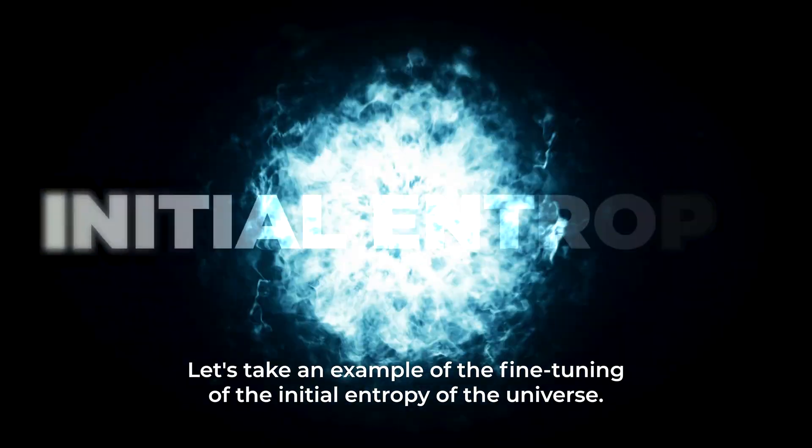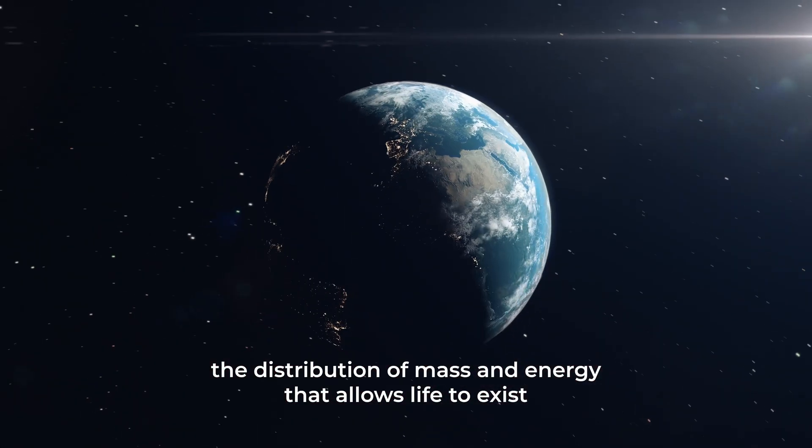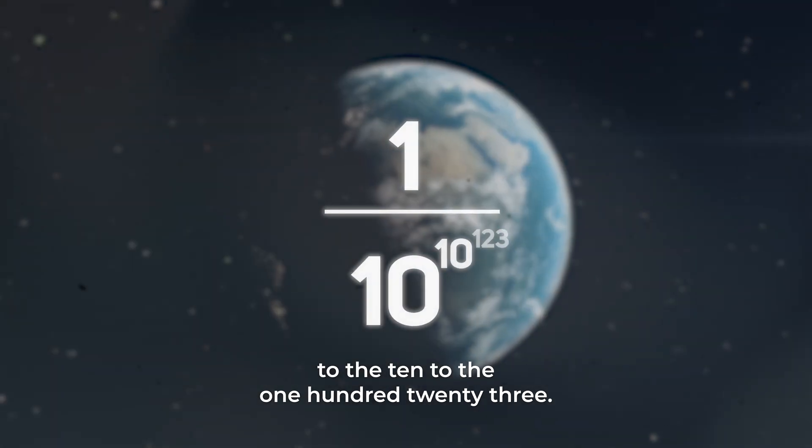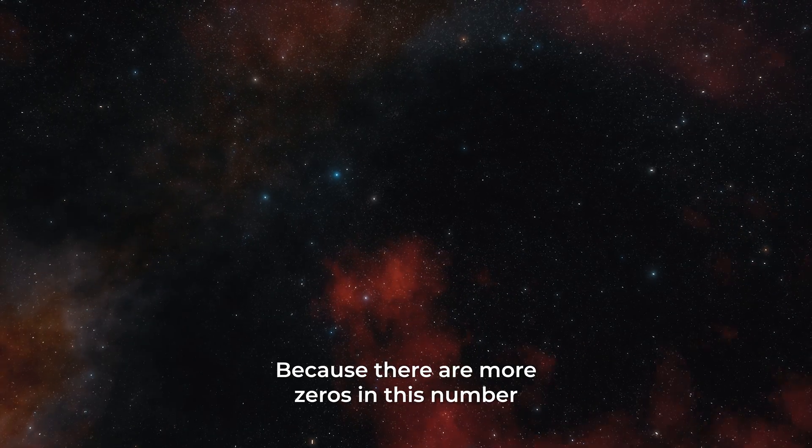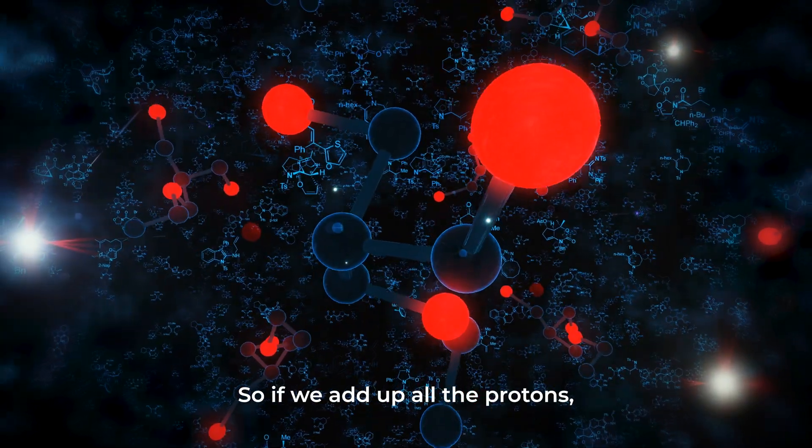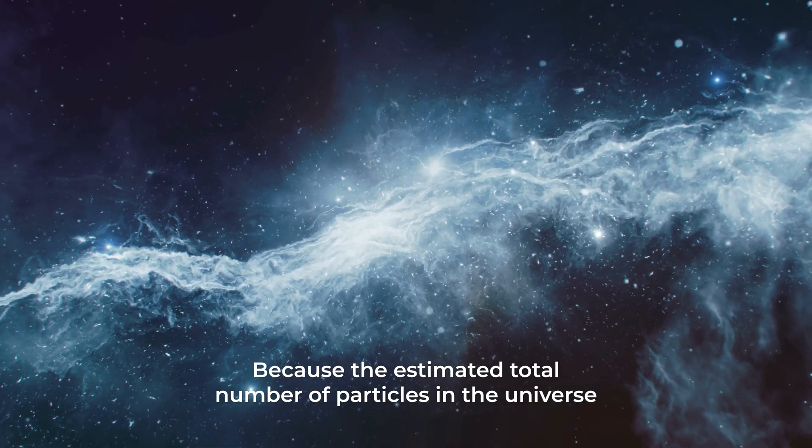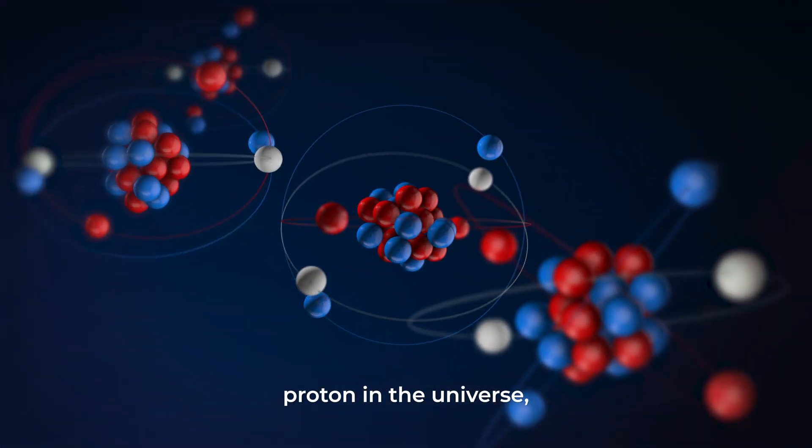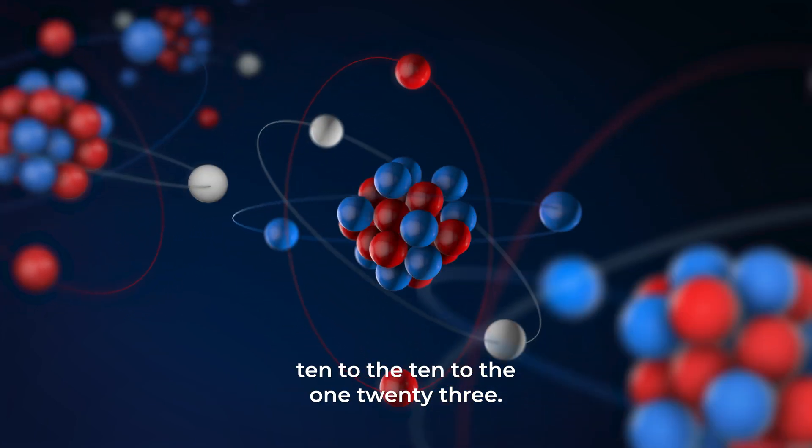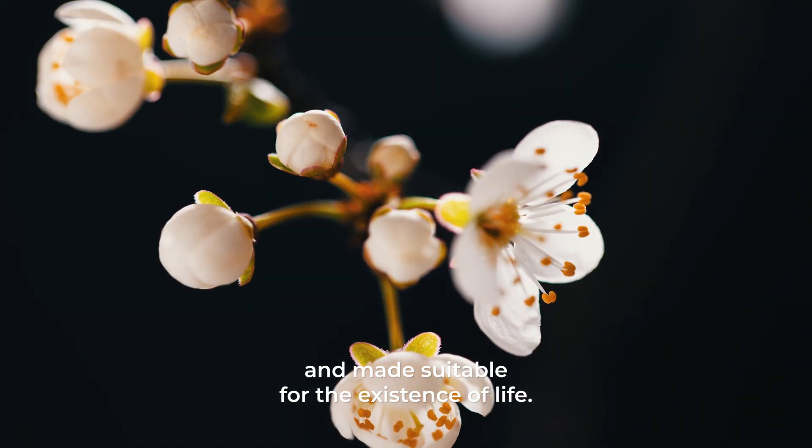Let's take an example of the fine-tuning of the initial entropy of the universe. According to Professor Roger Penrose, an Oxford physicist, the distribution of mass and energy that allows life to exist is 1 divided by 10 to the 10 to the 123. This is the highest value in the history of physics. It is even impossible to write down, because there are more zeros in this number than there are particles in the entire universe. So if we add up all the protons, electrons, and neutrons in the universe, we still cannot reach that number, because the estimated total number of particles in the universe is 10 to the 87. So even if we write a zero on every electron and proton in the universe, we still cannot write down the number 10 to the 10 to the 123. Even if the initial entropy of the universe was 1 in 10 to the 10 to the 123 different, life would not be able to exist. However, it has been adjusted to exactly those values and made suitable for the existence of life.